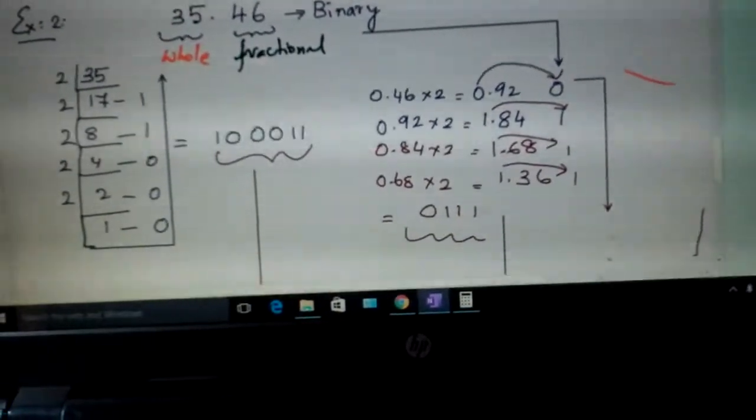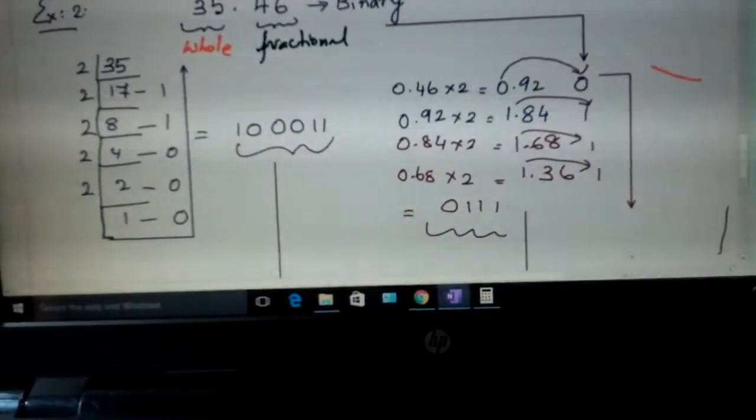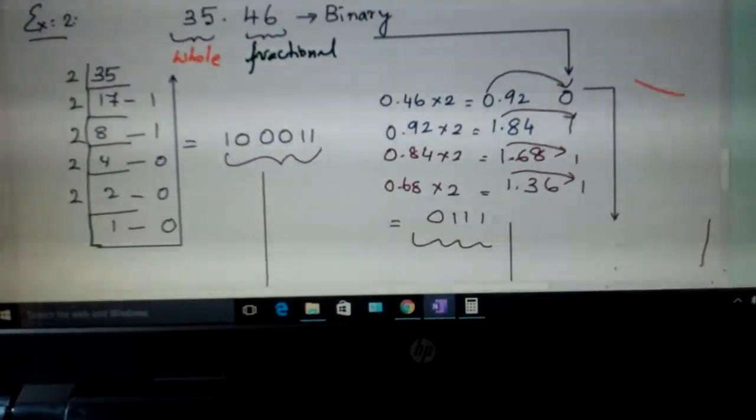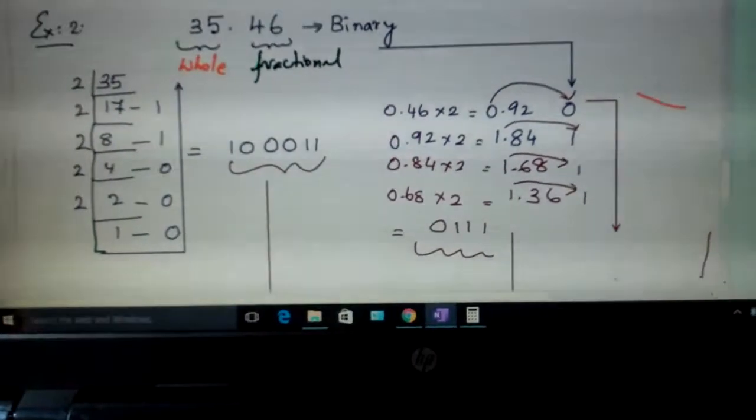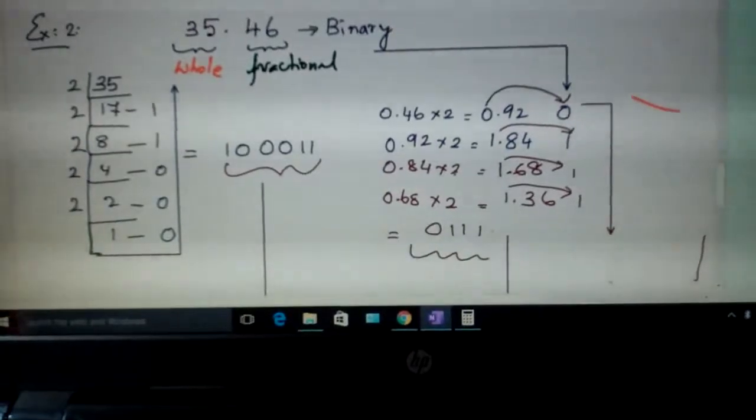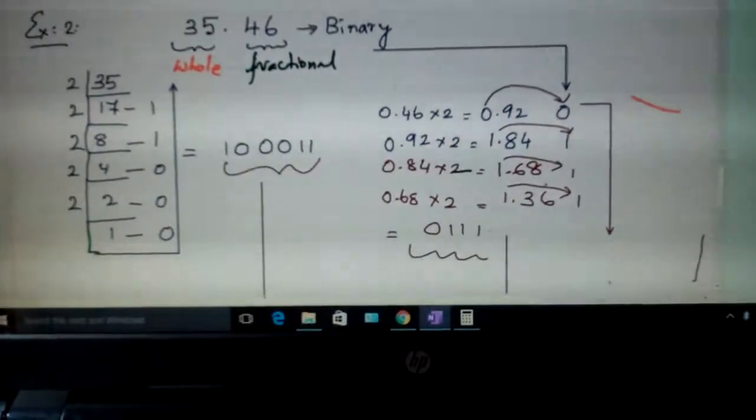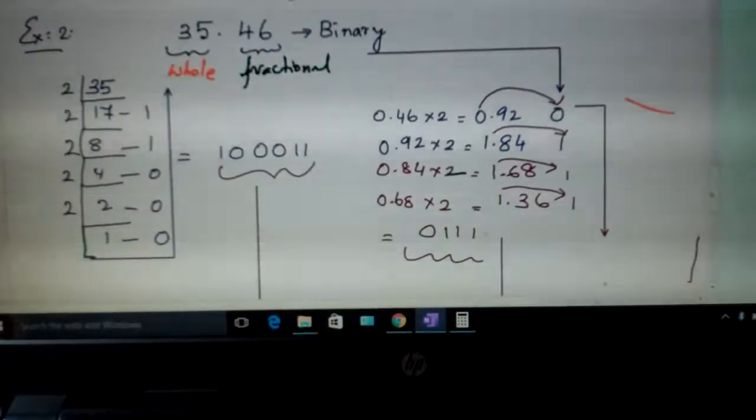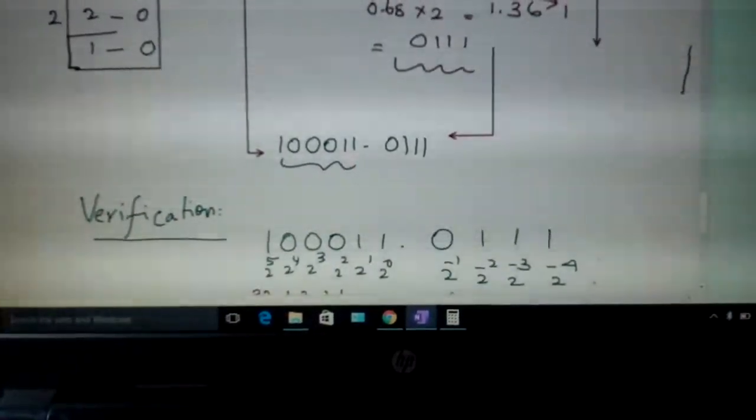And the fractional part is 0.46. Multiply it with 2, we will get it as 0.92. Write 0 here. 0.92 multiply it with 2, you get this. Write 1 here. 0.84 multiply it with 2, you get this. Write 1 here. 0.68 here. And you can continue. Write them in the reverse order.